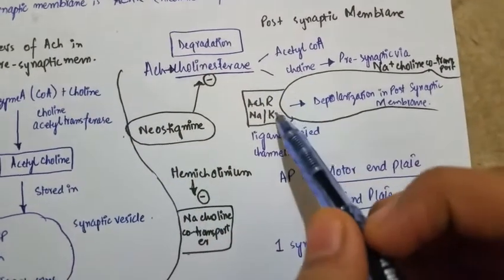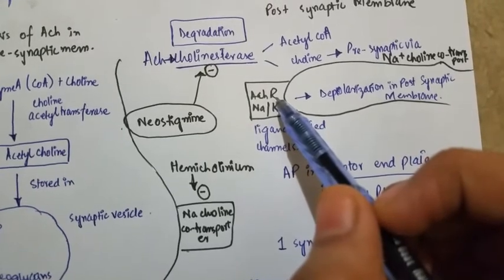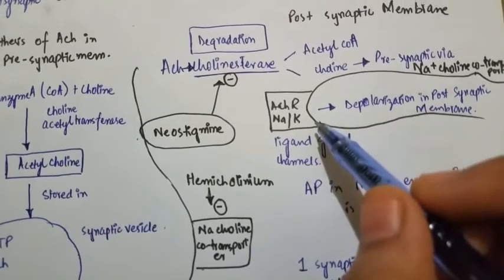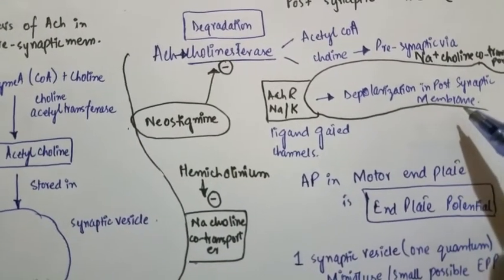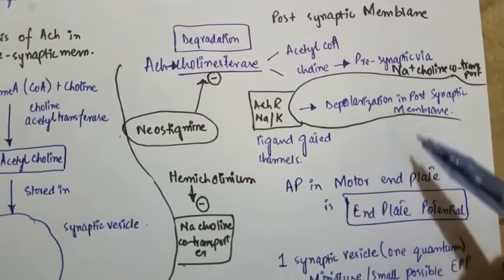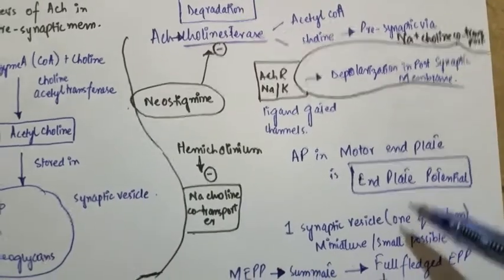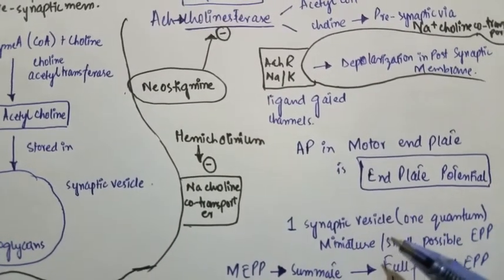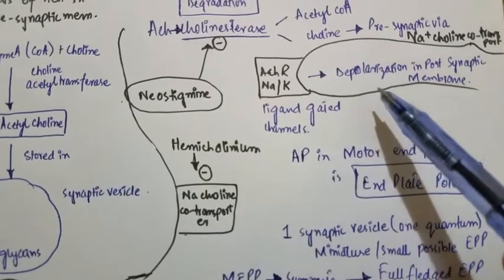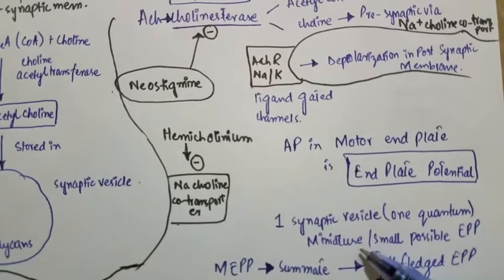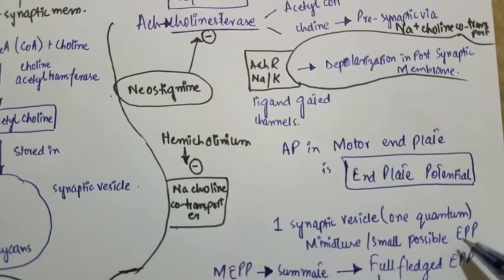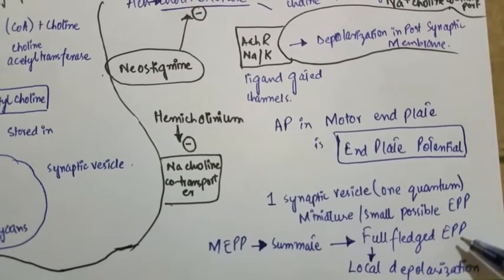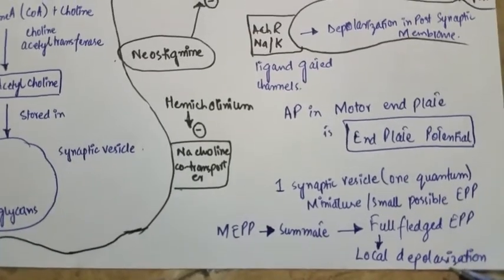Acetylcholine binds with the acetylcholine receptor, also called the nicotinic receptor, which are sodium-potassium ligand-gated channels. This leads to depolarization of the postsynaptic membrane. The action potential at the motor end plate is called the end plate potential. One synaptic vesicle, or one quantum, produces a miniature end plate potential. These miniature potentials summate to form the full end plate potential, causing local depolarization of adjacent muscle fibers.